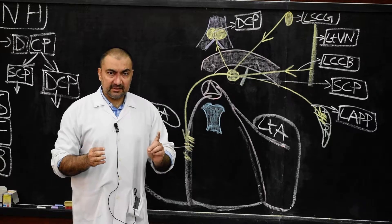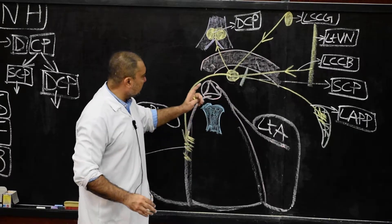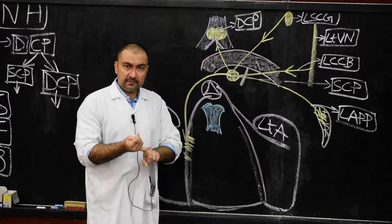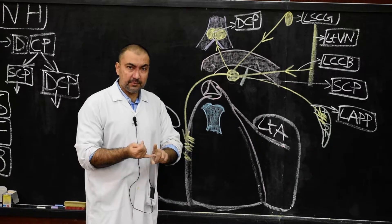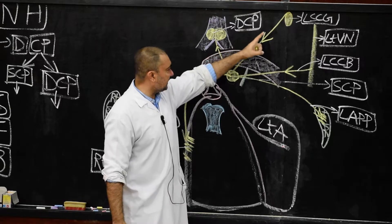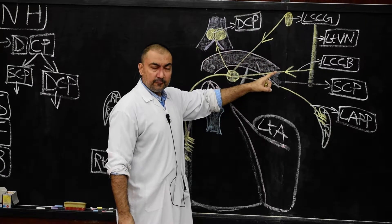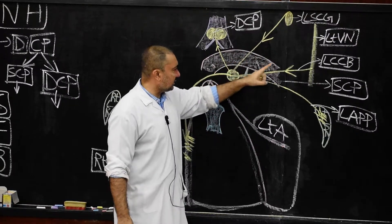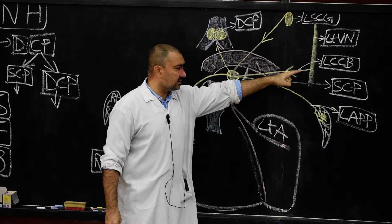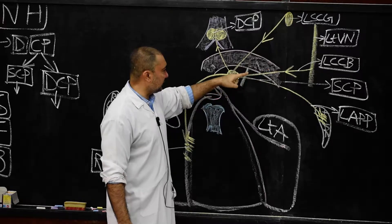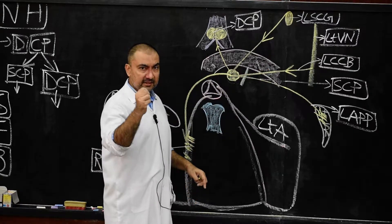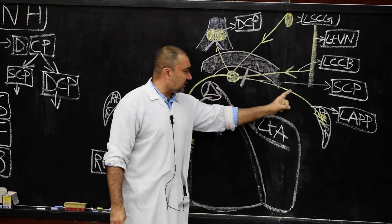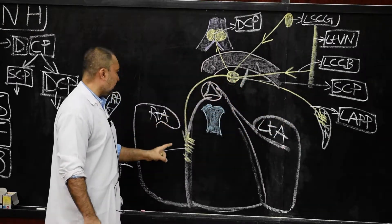Summary of the superficial cardiac plexus: situation — below arch of aorta, right side of ligamentum arteriosum, in front of right pulmonary artery. Formation — from the left superior cervical sympathetic ganglion and the lower cervical cardiac branch of the left vagus nerve. Branches — to the deep cardiac plexus, left anterior pulmonary plexus, and right coronary plexus.